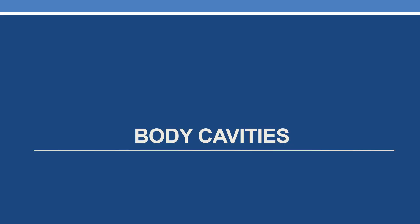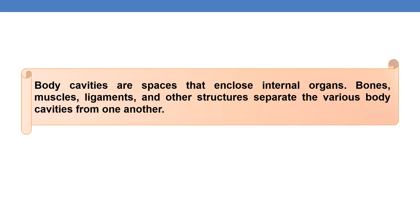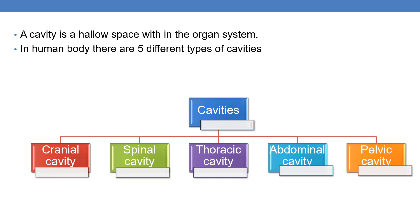Next, coming to body cavities. Body cavities are spaces that enclose internal organs. Bones, muscles, ligaments and other structures separate the various body cavities from one another. A cavity is a hollow space within an organ system. In the human body there are mainly five different types of cavities: cranial, spinal, thoracic, abdominal, and pelvic cavities.